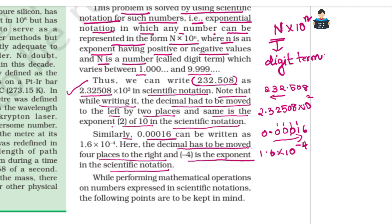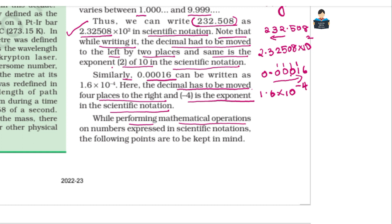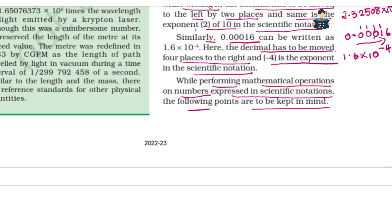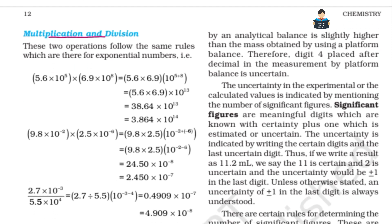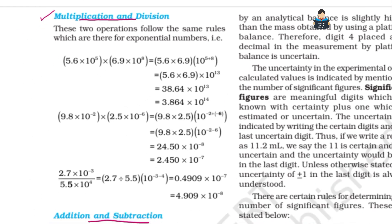So smaller numbers are easy to handle once converted, but big numbers also become manageable. While performing mathematical operations on numbers expressed in scientific notation, the following points are to be kept in mind. For addition, subtraction, multiplication, and division, we use scientific notation and follow specific rules.